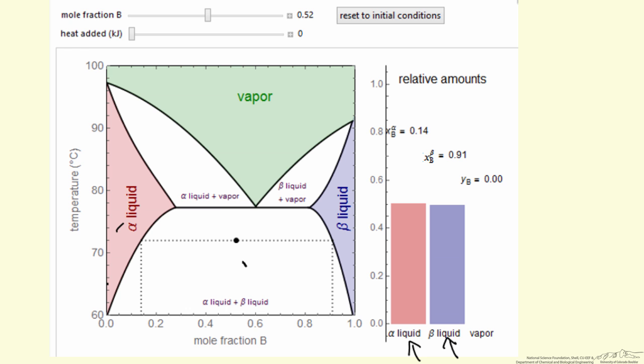The beta liquid corresponds to this region where A is partially miscible in component B. Then we have a very large region where the two phases coexist as two distinct phases. The dot here corresponds to a mixture of the two phases, and then we have vapor-liquid equilibrium the way we normally have seen it.